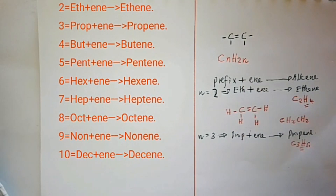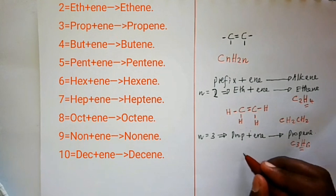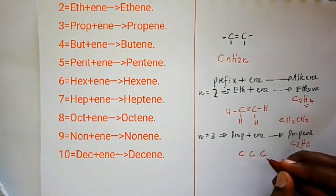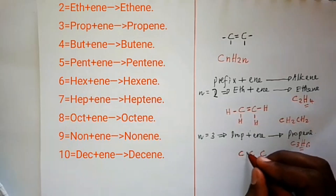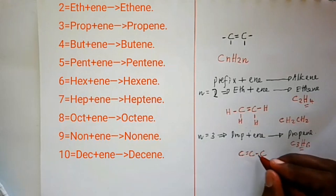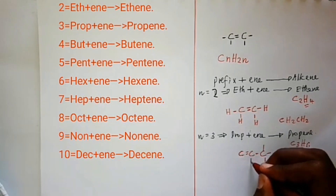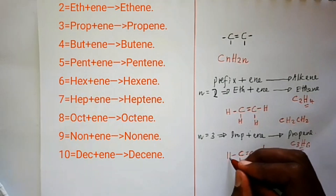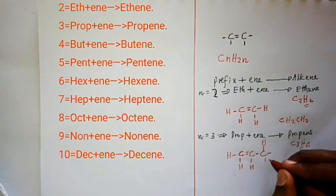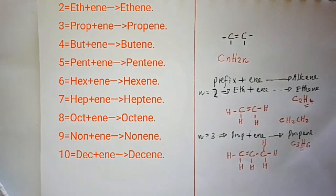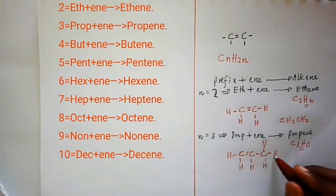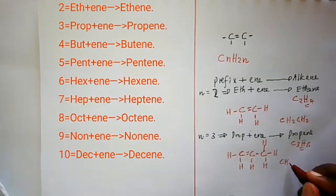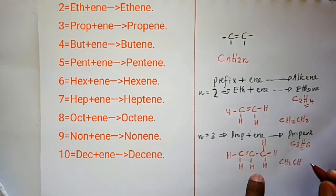To draw propene, you draw three carbon atoms and place the double bond between carbon one and carbon two. Complete the bonding: you distribute the hydrogens. When condensed, this carbon is joined to two hydrogens giving CH2, the next is joined to one hydrogen giving CH, and the last carbon is joined to three hydrogens giving CH3.